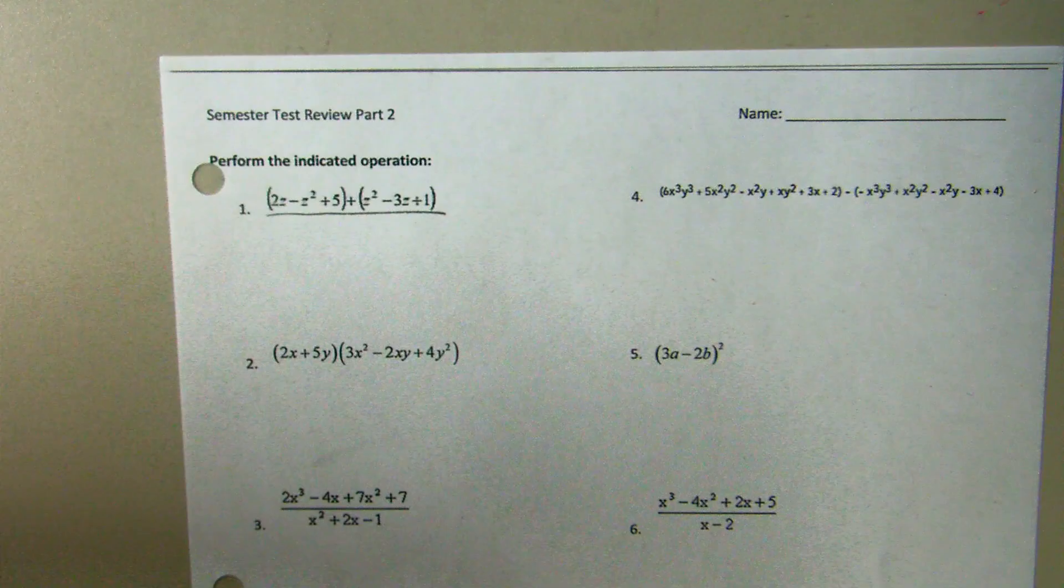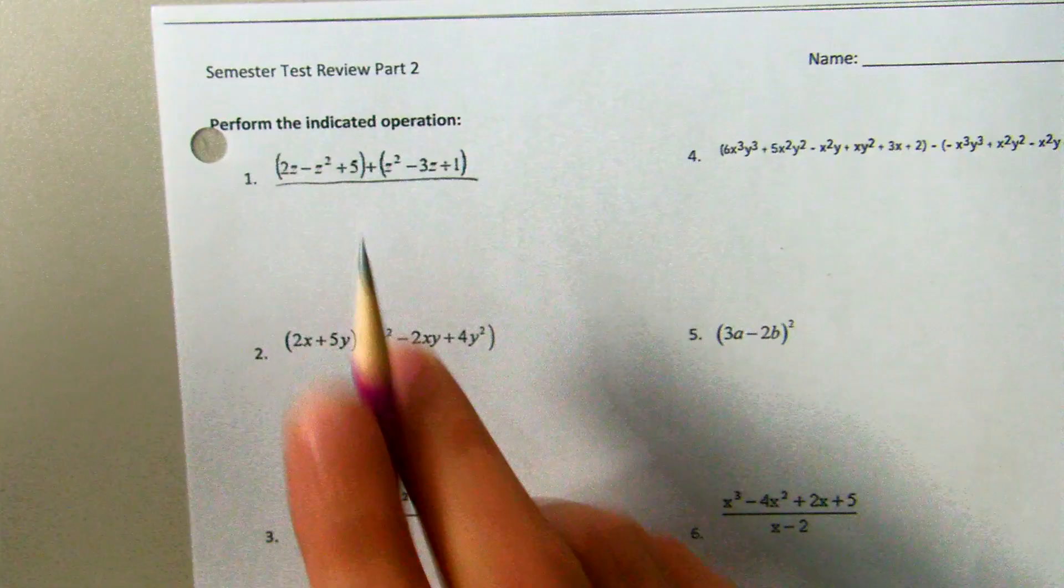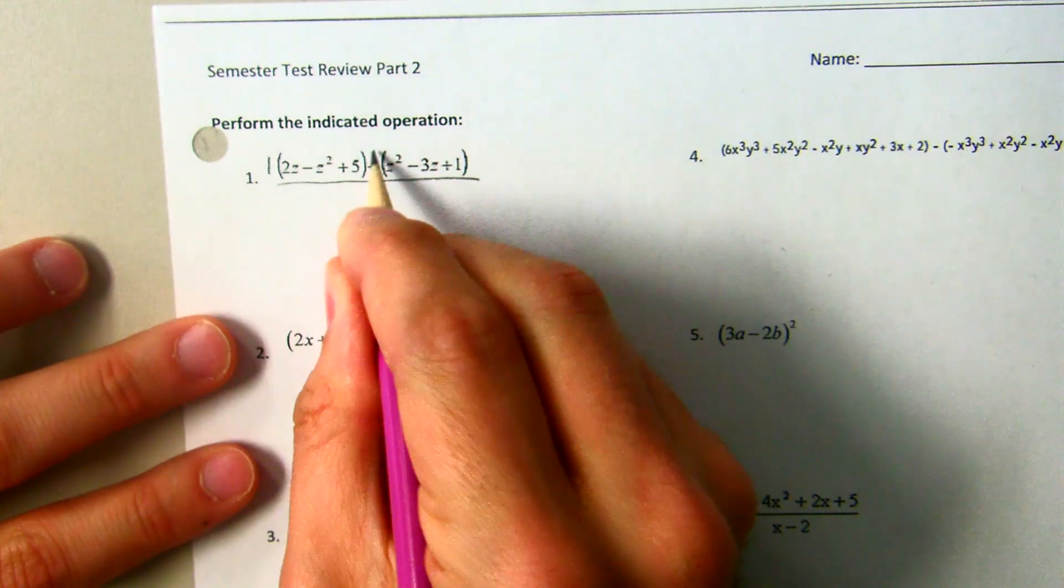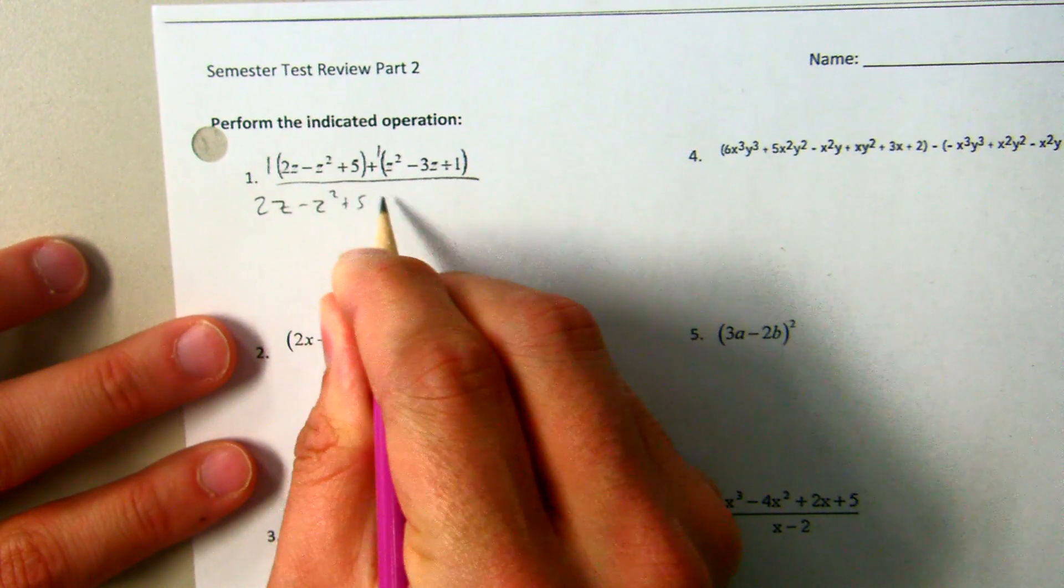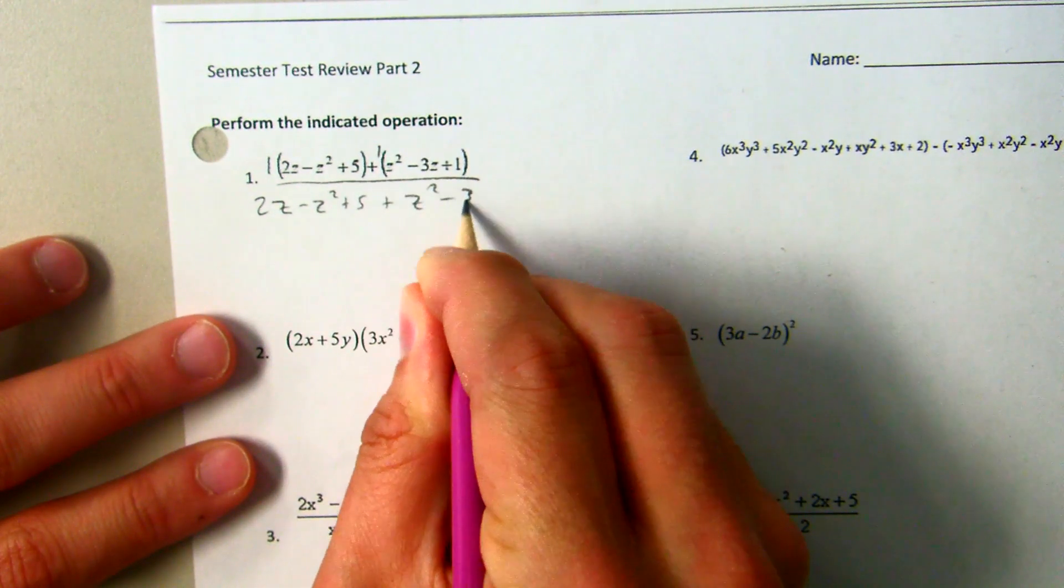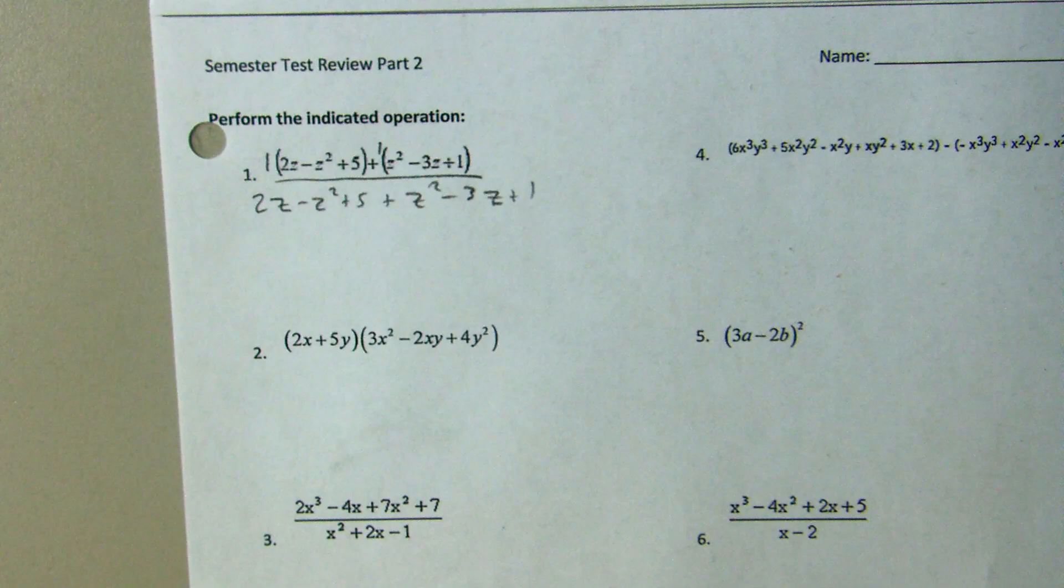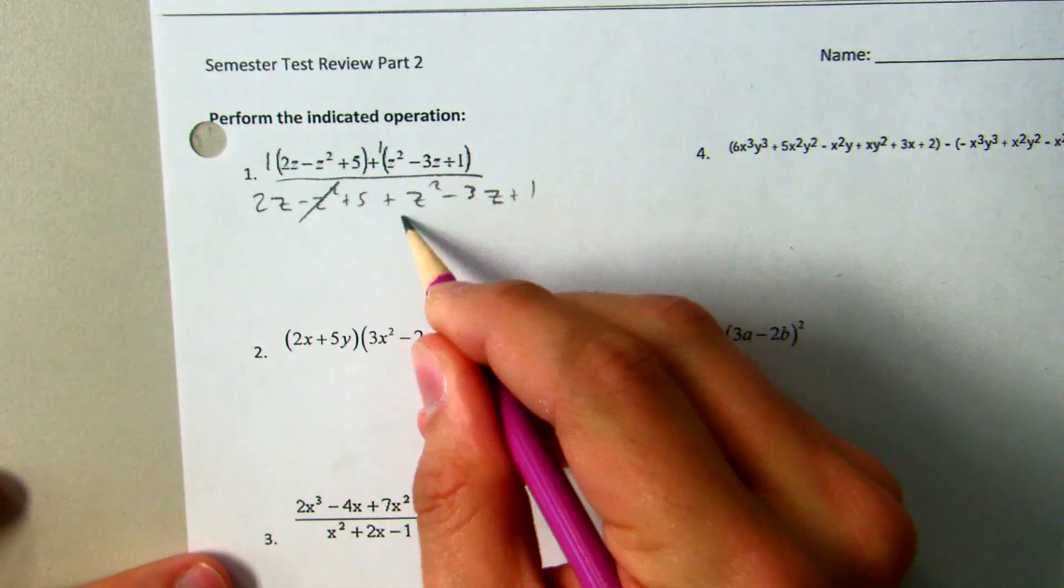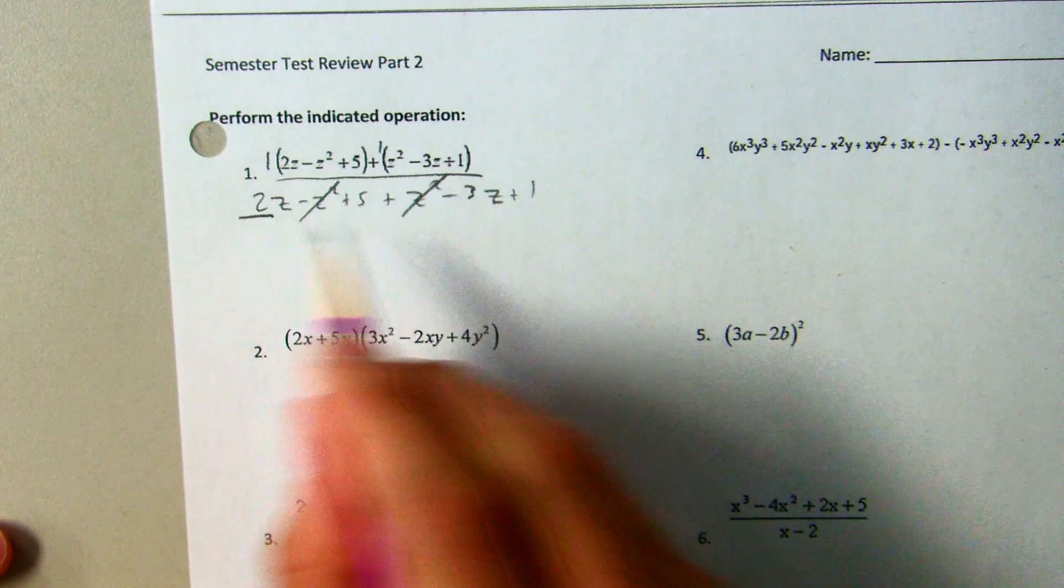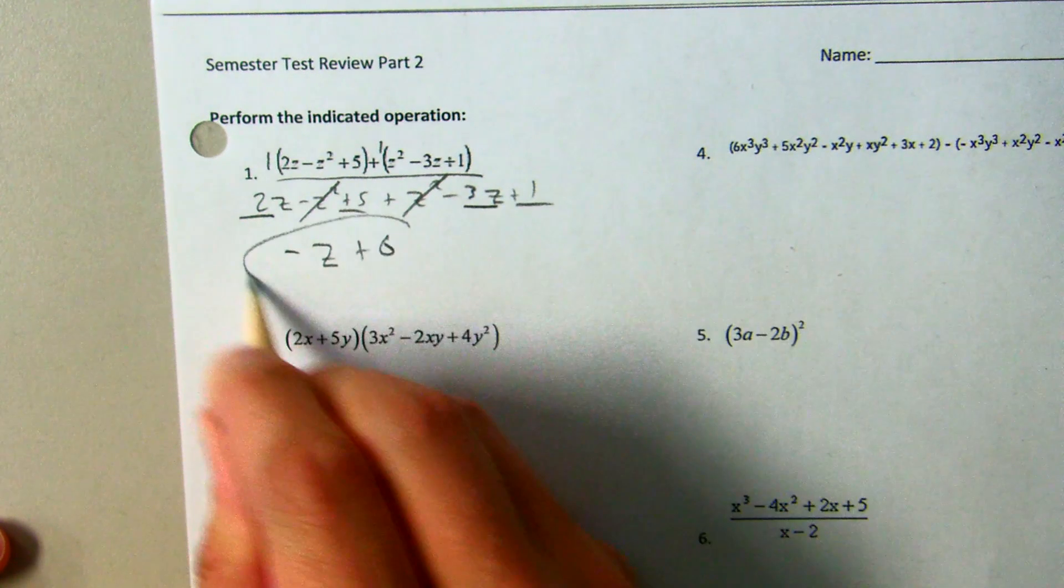So one example of adding, these parentheses bother you. You know one way to get rid of parentheses is just to distribute, so there's no number out front, so that's like a positive one. You can do that if you want to, and it's basically like combining like terms. Add your z squareds together, add your z's together, and add your constants together.